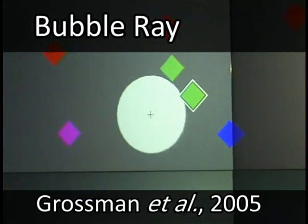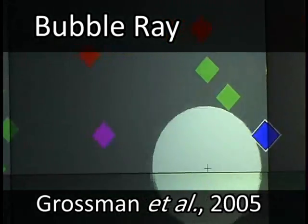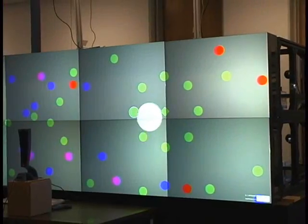Bubble ray automatically expands or contracts the size of the cursor to select the nearest target, thus removing any empty space between targets. Using this technique, sparse targets become easier to select, but dense targets still require precise selection.